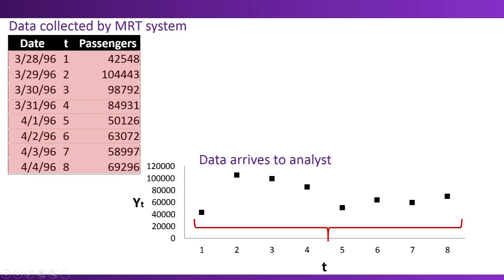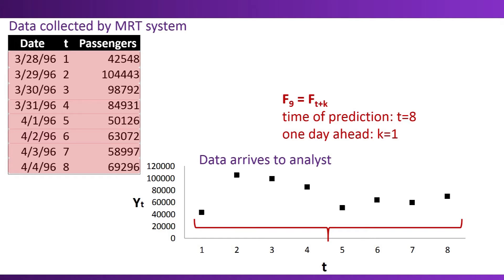So in this case, if I'm trying to forecast the ridership on the ninth day, I can use all the information from days one to eight and generate a one-step-ahead prediction. On day eight, I can generate a one-step-ahead forecast for day nine — F9 is going to be F of 8 plus 1.